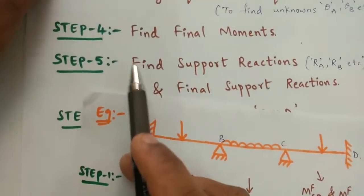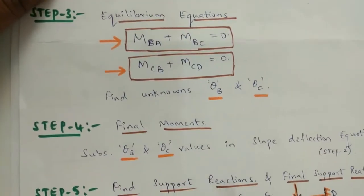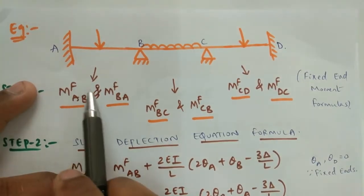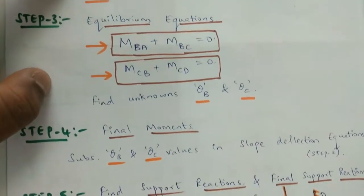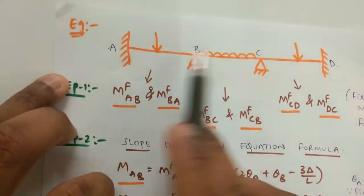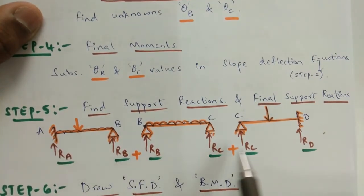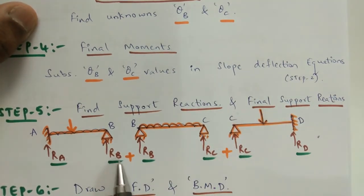In step number 5, to find the support reactions and final support reactions, you have to separate the spans. Whereas to find the fixed end moments we assumed every support as a fixed support, to find the support reactions we divide the beam into separate spans AB, BC, and CD. Then you find RA, RB for span AB, RB and RC for span BC, and RC and RD for span CD using equilibrium conditions. You then add the RB values and RC values at the intermediate supports to get the final support reactions.